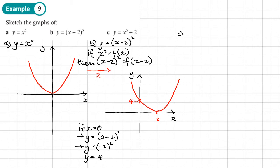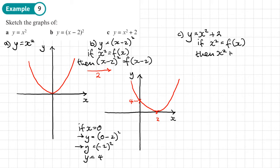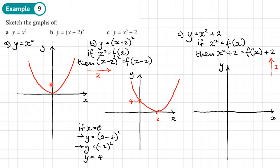For part c, we have y equals x squared plus 2. If x squared equals f(x), we haven't replaced the x with anything — all we've done is add 2 on the end. So x squared plus 2 is the same as f(x) plus 2, which moves the graph up by 2 squares. We take the original graph, move it up by 2, so it's the same shape but crossing the y-axis at 2. We sketch that in with a 2 marked on the y-axis.